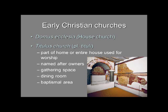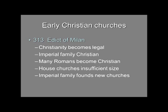In early 4th century Rome, 25 tituli, or house churches, were known. We have to mention the Edict of Milan in 313, when Christianity becomes legal. The imperial family is Christian, and it becomes safe — and also advantageous — to become a Christian. So many Romans became Christians, and house churches just wouldn't fit the congregations. They were just too small.